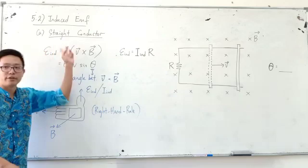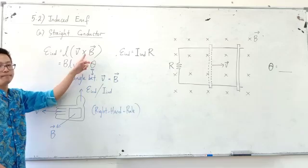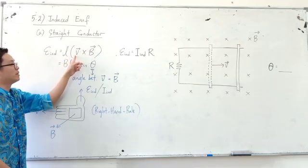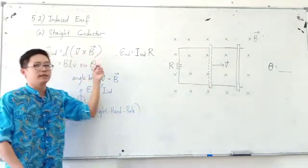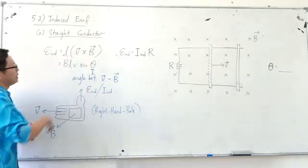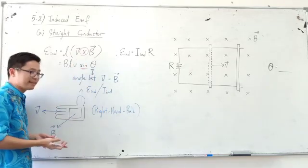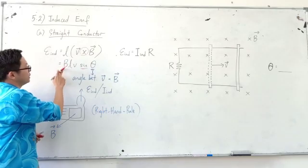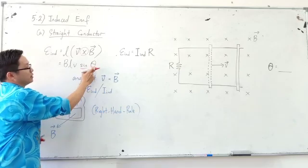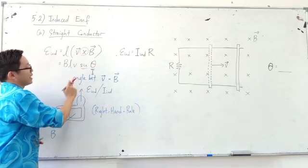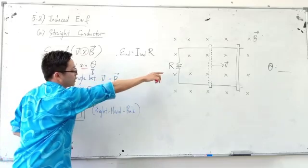The formula for a straight conductor is: induced EMF equals B times L times V. L is the length, V is the velocity of the wire moving, and B is the magnetic field strength. Since it is a cross product, we use sin theta. So it is also equal to BLV sin theta. What is this angle theta? Theta is the angle between velocity and magnetic field. There is one example to find the angle theta.